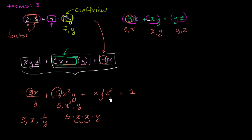With that same convention in mind, the next term xy²z⁵ also has three factors: x, y squared, and z to the fifth. And finally, the last term is a constant term. How many factors does it have? It's just a one sitting there — it's not being multiplied by anything, so it has just one factor.